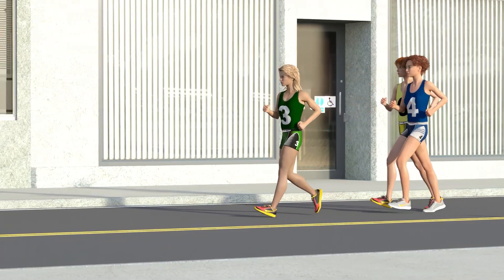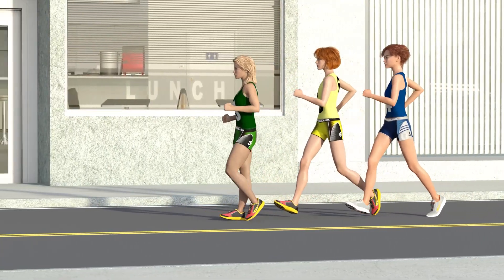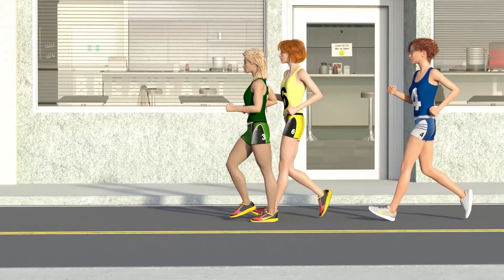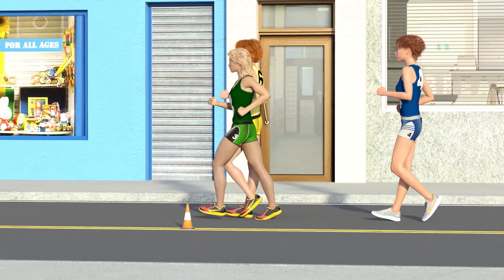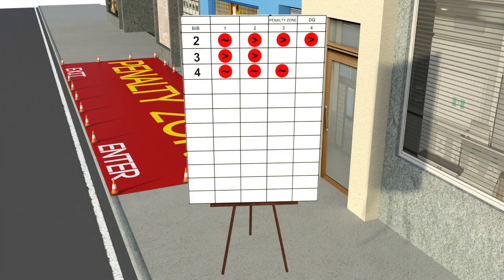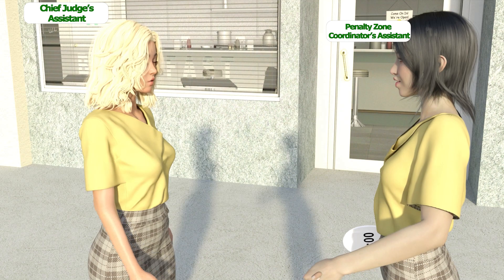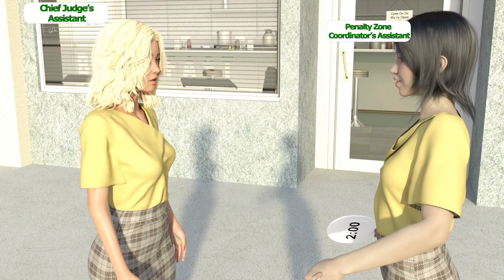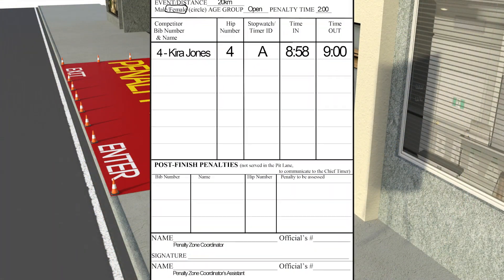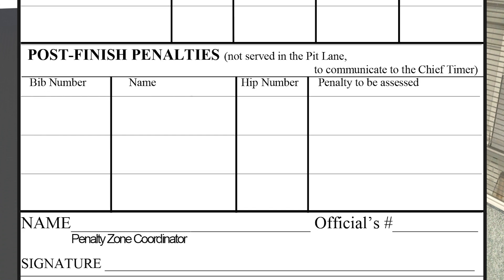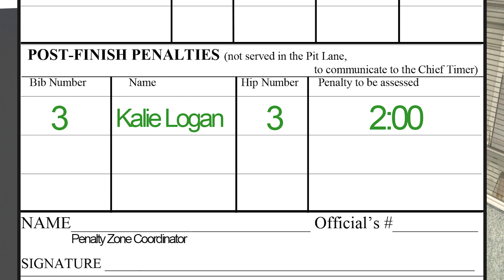The leaders of the race come by one last time as they head to the finish line. Then a third red card gets posted on the DQ board for walker number 3. The chief judge's assistant alerts you to place number 3 in the penalty zone for two minutes. However, walker number 3 will not pass by you again. Since she will not be able to serve the time penalty, two minutes for her 20k will be added to her finishing time. Fill out the post-finish penalty sections of the timesheet, noting the two-minute penalty to be added. Alert the finish line in a timely fashion, perhaps by alerting the referee or chief racewalking judge, who will inform the chief finish judge of number 3's time penalty.